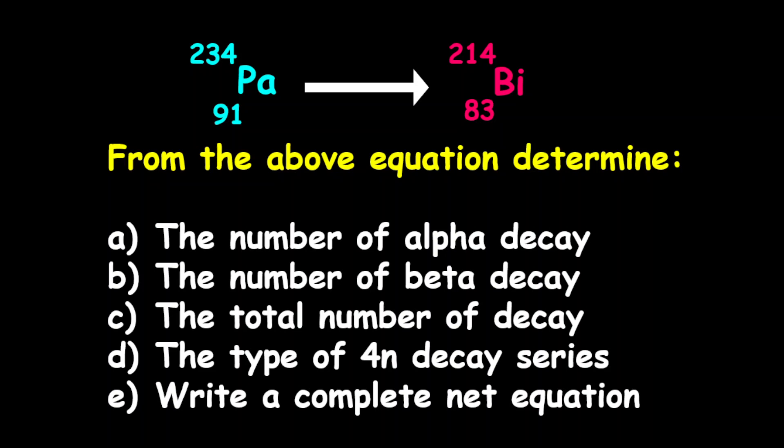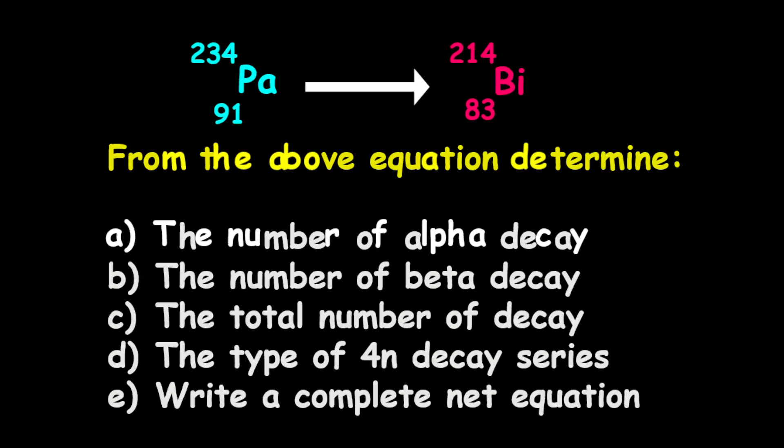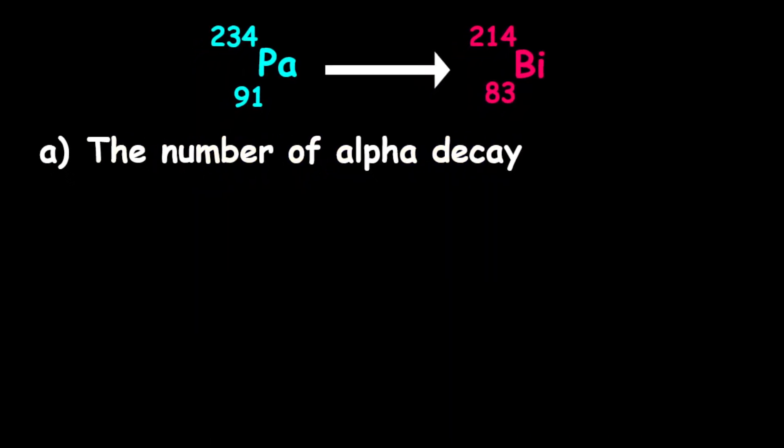Now to find the number of alpha decay, what you need to remember is that the mass number is only affected by the alpha decay. A beta decay does not affect the mass number at all. So therefore, an equation that we can use here is that the number of alpha decay equals the change in mass divided by 4.